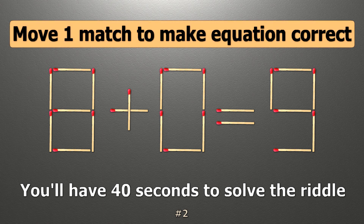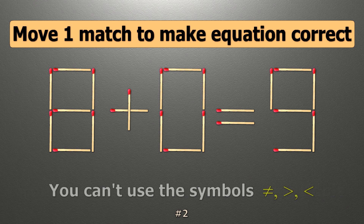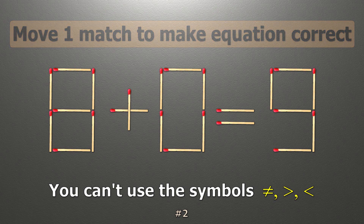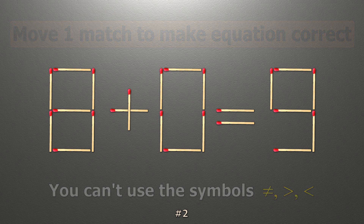We have the equality 8 plus 0 equals 9. Our equality is wrong. We need to move one match to make our equality correct.